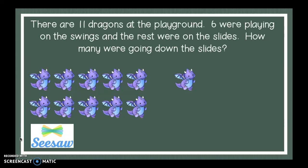This one says, there are 11 dragons at the playground. Six were playing on the swings and the rest were on the slides. How many were going down the slides? So let's see. There are 11 dragons at the playground and six were playing on the swings. The rest were on the slides. How many were going down the slides? If you'll notice, I drew 11 cute, adorably cute dragons.